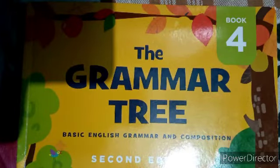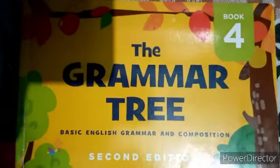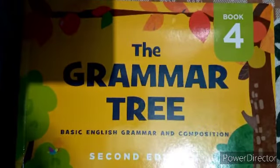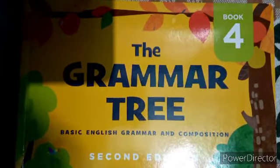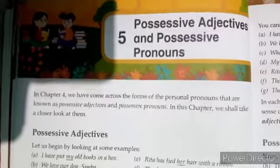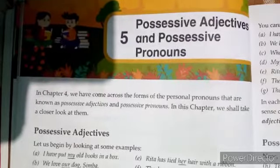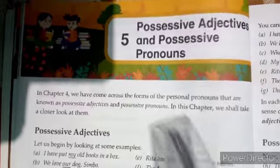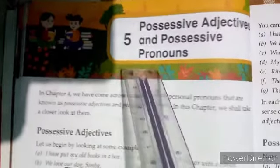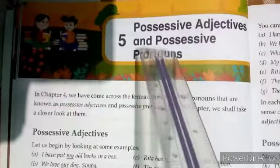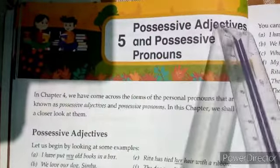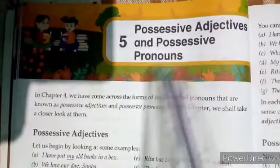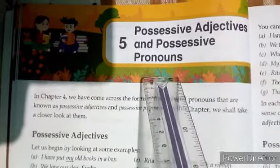Assalamualaikum class. Here is your book, The Grammar Tree. So let's open your books. Students, today we are going to start a new chapter — Chapter number 5, that is Possessive Adjectives and Possessive Pronouns.